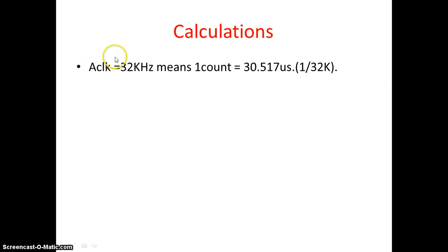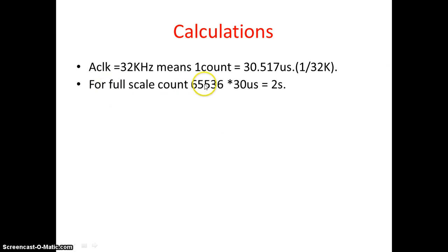Let us do some calculation. If I am using ACLK at 32 kHz, for each one count I get 30.517 microseconds — that is the time period of the clock. For a full-scale count of 65,536 (FFFFH), multiplying by 30.517 microseconds gives 2 seconds, so the last condition is satisfied. For a 0.25-second delay, I divide the full scale by 8: 65,536 divided by 8 equals 8192 decimal, which is 2000H. Loading a channel register with 2000H gives a 0.25-second delay.